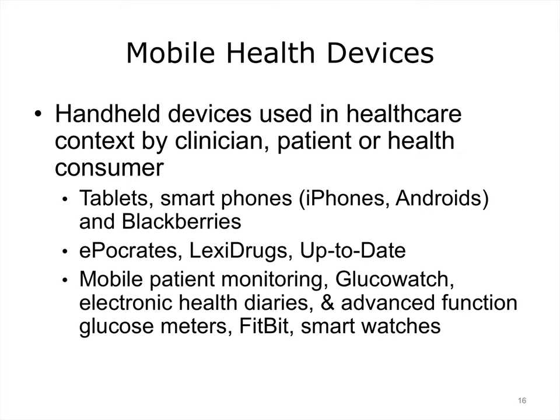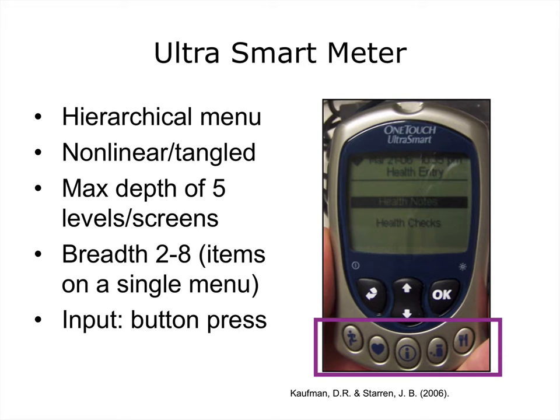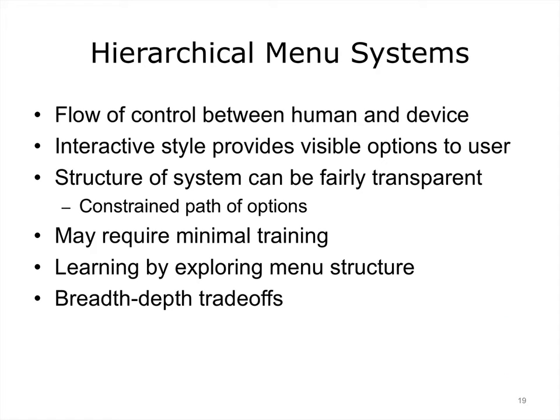Mobile health devices are becoming increasingly prominent and important as instruments of healthcare. They encompass a range of tools used by clinicians as well as patients. Although they are promising and have grown significantly in capabilities and popularity, they still lack a stable and consistent interaction paradigm — meaning there is a lot of variability in the way they interact with the user. The focus of the next few slides is on a study conducted by Kaufman and colleagues of an advanced function glucose meter. The target population was older adults, who comprise a rather large percentage of patients with diabetes. The study employed the LifeScan Ultra Smart Glucose Meter, which uses a hierarchical menu system as a mode of interaction.